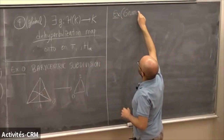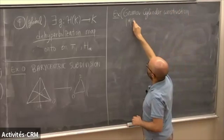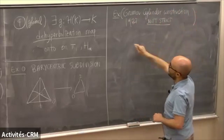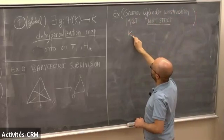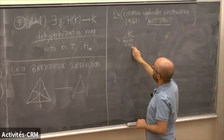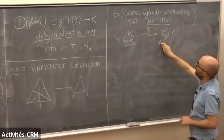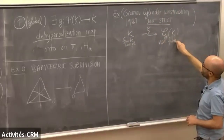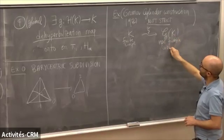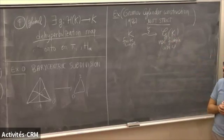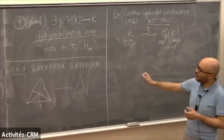The next example is called the Gromov cylinder construction, from 1987. This is not a strict procedure. It takes as input a finite simplicial complex and outputs what I'll call the Gromov space — a non-positively curved, foldable cubical complex. This procedure is defined inductively on cells: on vertices, do nothing; on edges, do barycentric subdivision; and in dimension two, I'll tell you what to do.